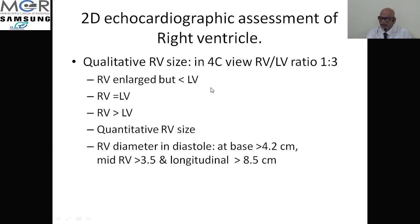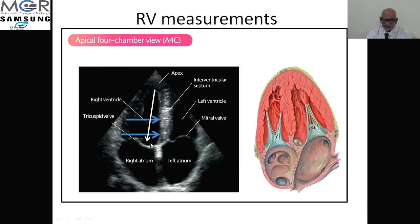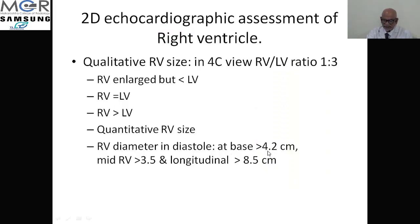For RV to appear enlarged it must first compete with the LV and go beyond it before it becomes apparent. If the RV:LV ratio becomes 1:1 (instead of the normal 1:3), you can still call it dilated RV; if RV is larger than LV, that confirms enlargement. You can measure RV dimension in diastole at the base and these parameters will let you know the actual degree of RV dilation.